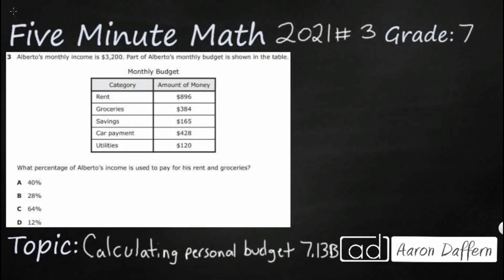Hello and welcome to 5-Minute Math. Today we are looking at the 7th grade concept of calculating personal budget. This is standard 7.13B in the great state of Texas, and we are using item number three of the 2021 released STAAR test.